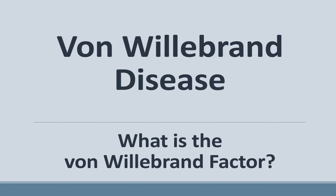Von Willebrand Disease is the most common coagulopathy or bleeding disorder in the world. As we will see throughout this three video series, Von Willebrand Disease is more complex than Haemophilia A and B because the concerned protein called Von Willebrand Factor has different functions. In this first video, we will see the different functions of the Von Willebrand Factor. This is necessary to understand the second video, which will address the different types of Von Willebrand Disease. In the third and last video, we will discuss the treatment for Von Willebrand Disease. Look at the HemoKT channel for these other videos.